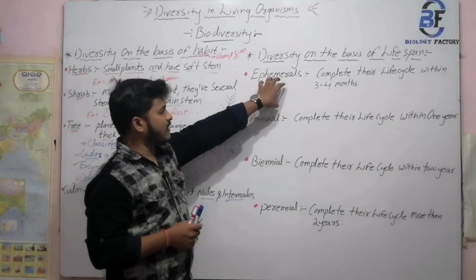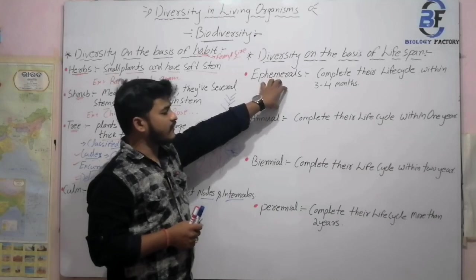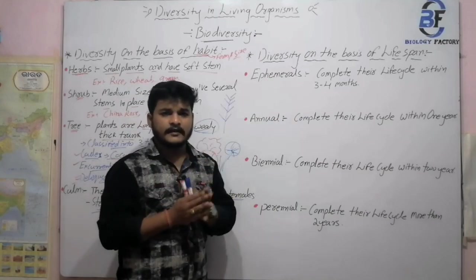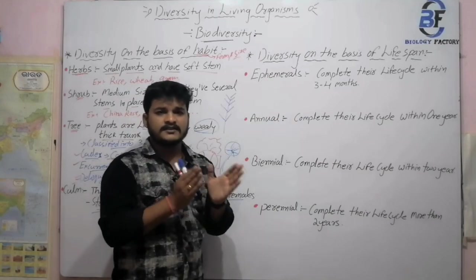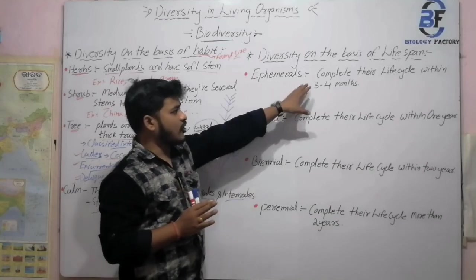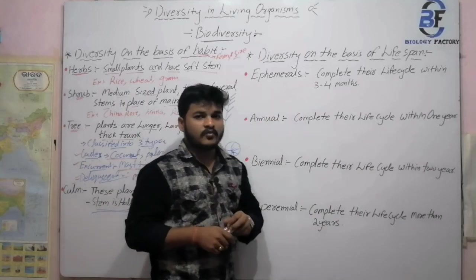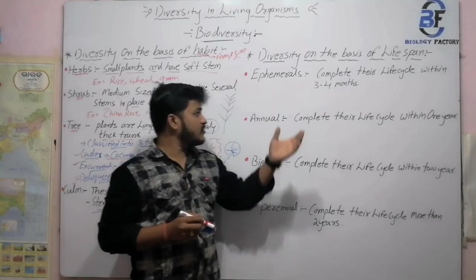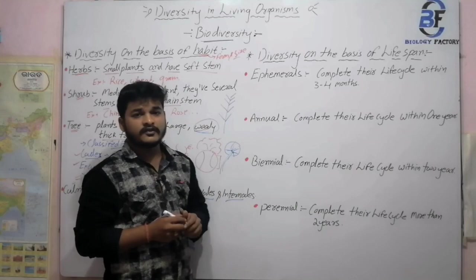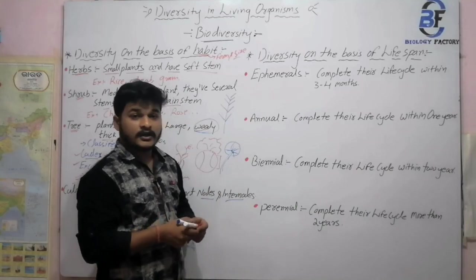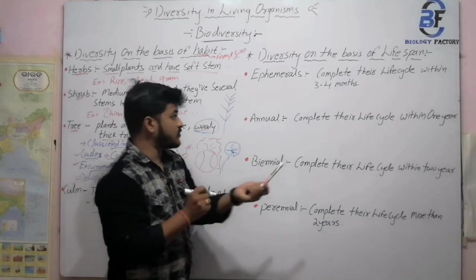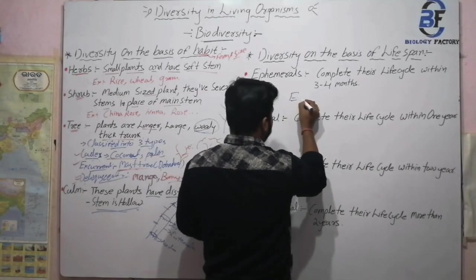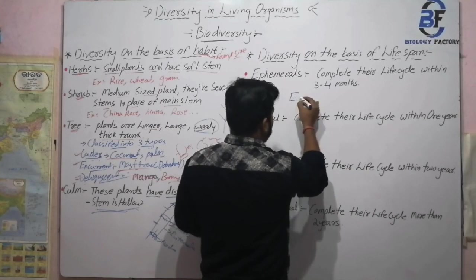Plants that come under the ephemeral condition have a short life span — that means they complete their lifespan within three to four months. The basic examples of ephemeral plants are potato and tomato.